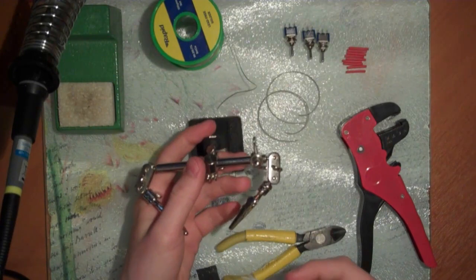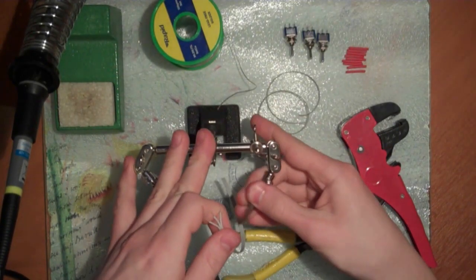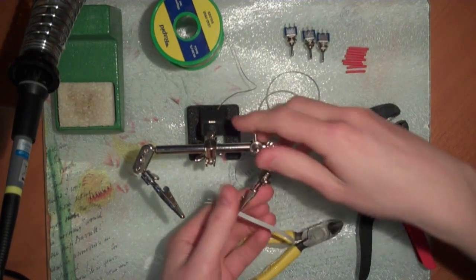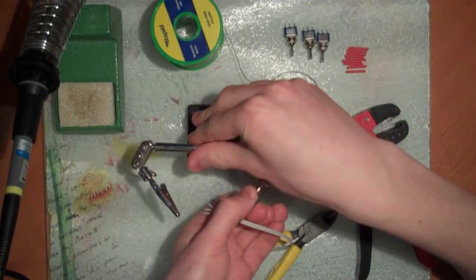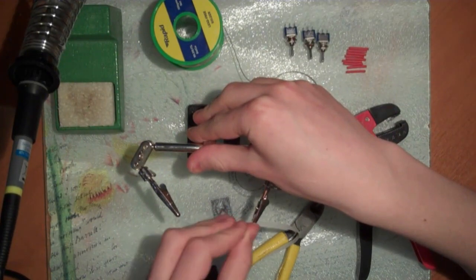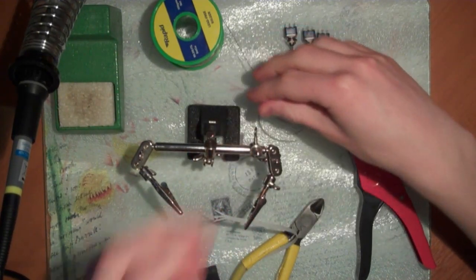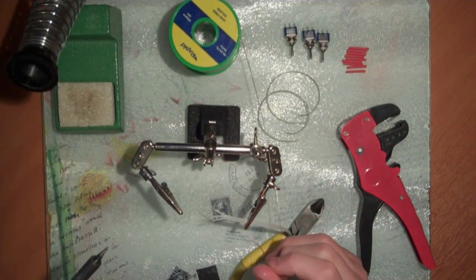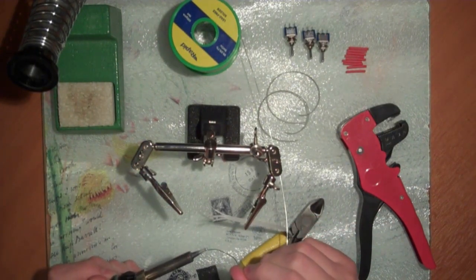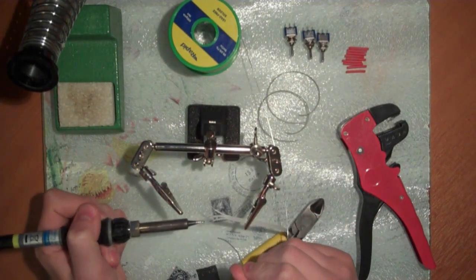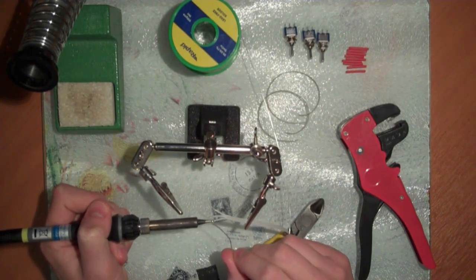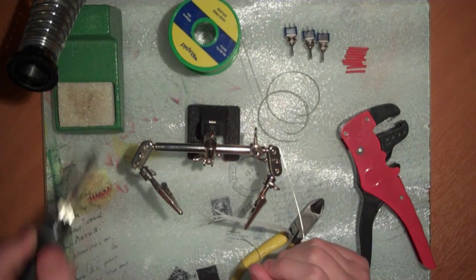And then if we clip them in helping hands, which is basically just crocodile clips on a flexible stand. As I say, not essential but useful nonetheless. Get the solder in iron. Put a little bit on the tip of the iron. And then touching one side of the wire with the iron, feed a bit of solder onto it and pull the solder like that.